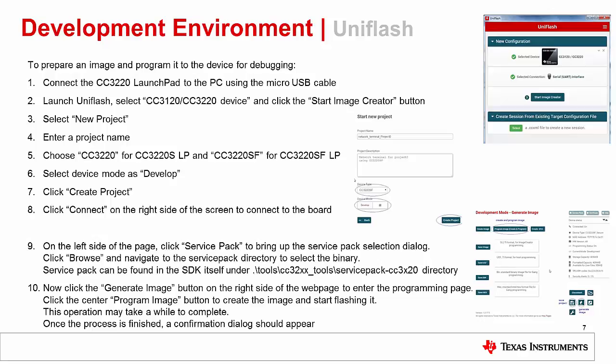Click Create Project and then click Connect on the right side of the screen to connect to the board. If the connection is successful, you'll see the device information appear on the right side of the page. On the left side of the page, click Service Pack to bring up the Service Pack selection dialog. Click Browse and navigate to the Service Pack directory to select the binary. The Service Pack can be found in the SDK under Tools, CC32XX Tools, Service Pack directory. Now click the Generate Image button on the right side of the page to enter the programming page. Click the Program Image button to create the image and flash it. This operation may take a while to complete. Once the process is finished, a confirmation dialog should appear.